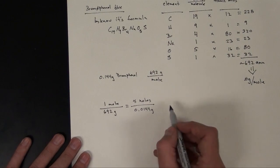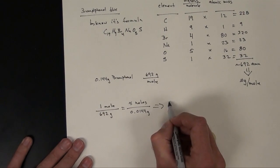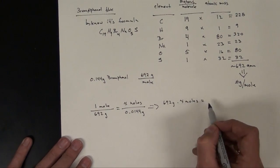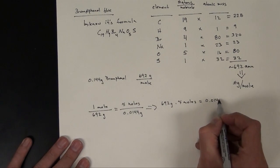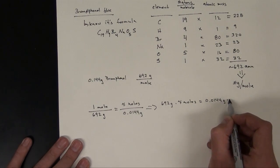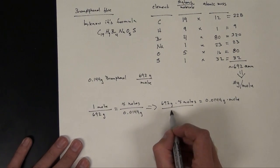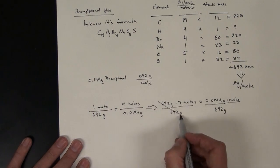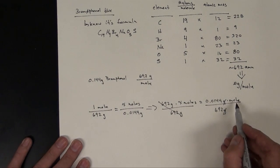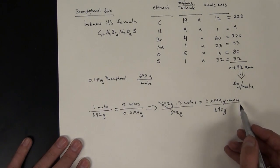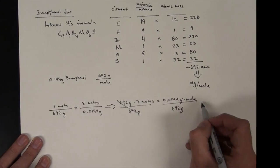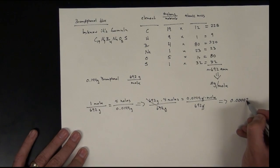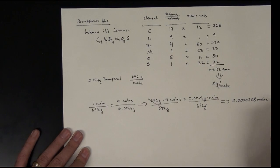So if I do my cross multiplication, if I go in this direction, I'm going to take 692 grams times x moles is equal to 0.0144 grams times 1 mole. If I solve for x, I need to divide both sides by 692 grams. These will cross out, grams will cross out, and I'm going to be left with moles. And in this particular case, I am going to have 0.0000208 moles of bromophenol blue.